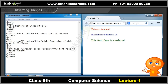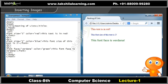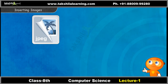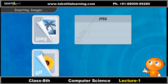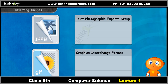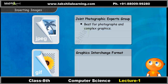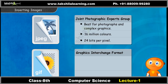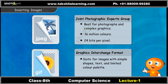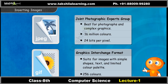By now you should be able to write basic code such as using different fonts and colors using HTML. Now let us learn to insert images to create an attractive page. You can use either JPEG or GIF images. JPEG stands for Joint Photographic Experts Group, and GIF stands for Graphics Interchange Format. JPEG is the best suited format for saving photographs and complex graphics; it gives 16 million colors and can store 24 bits per pixel. GIF is the best suited format for images with simple shapes, text, and limited color palette; it supports only 256 colors.